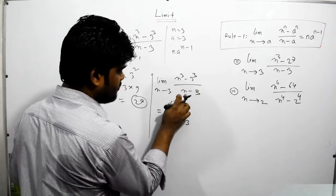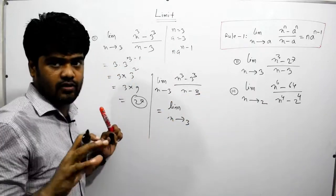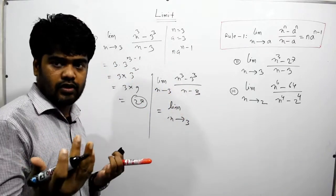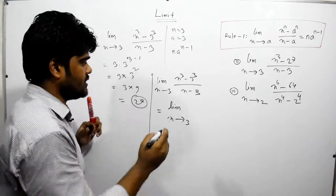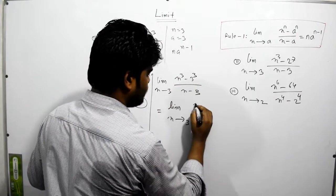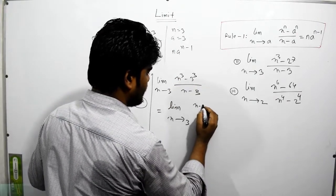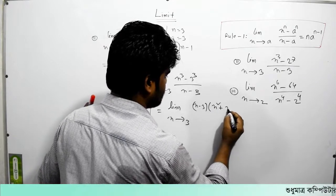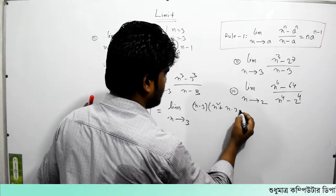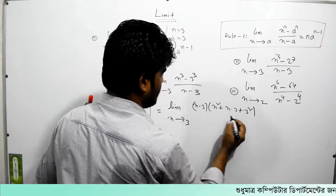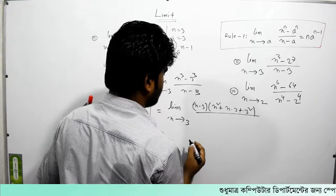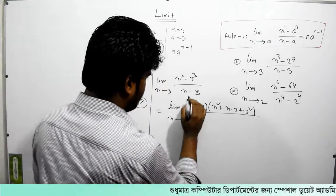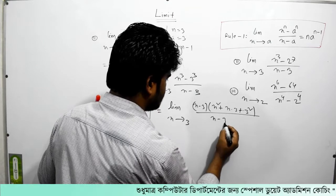If we use the algebraic identity, A cubed minus B cubed equals A minus B into A squared plus AB plus B squared, we can apply this to the numerator x cubed minus 3 cubed, divided by x minus 3.